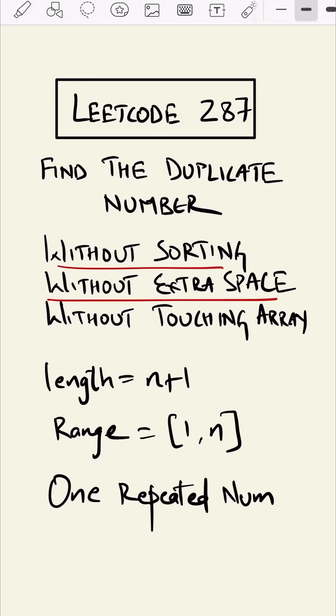Without sorting, without extra space, and without touching array. Welcome back to the LeetCode interview series, LeetCode 287: Find the Duplicate Number. In this question we are given an array or list with the length of n+1, and the numbers within that list will be of the range 1 to n, and we have to find the one repeated number.